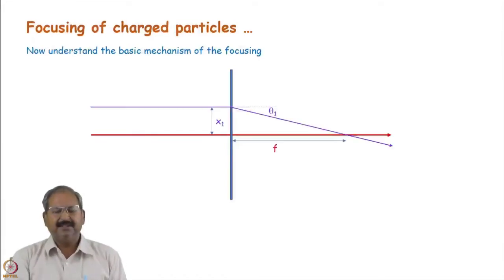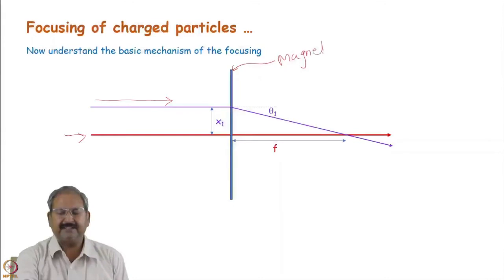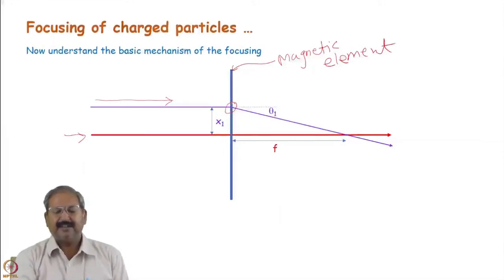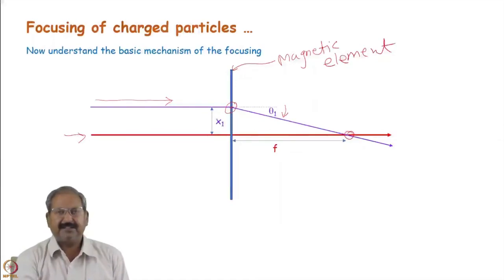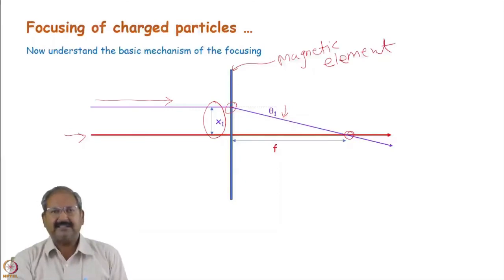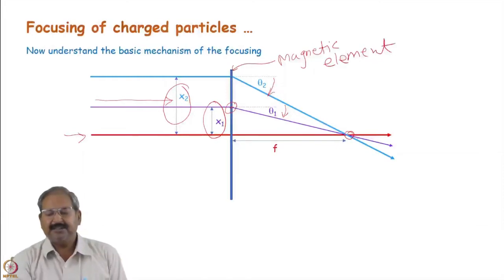For the basic mechanism of focusing, consider the optic axis (in red) with a particle traveling along a trajectory through a magnetic element used as a lens. The magnetic element generates a bending angle θ₁, and the deviation from the design trajectory is x₁. For a trajectory with larger deviation x₂, a larger bending angle is required to reach the same focal point.